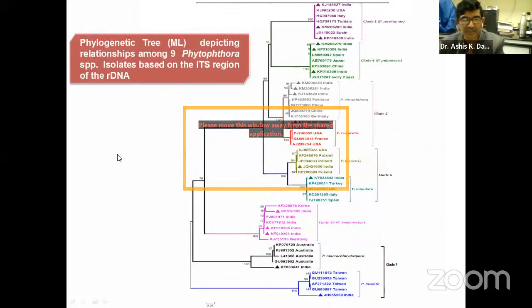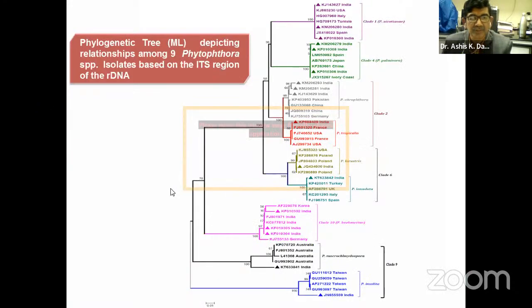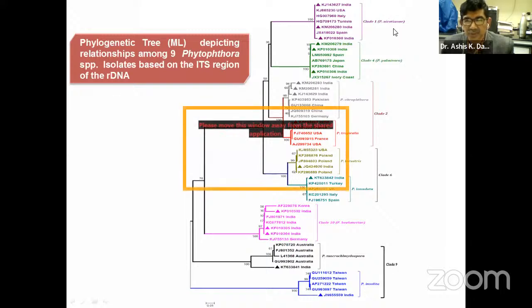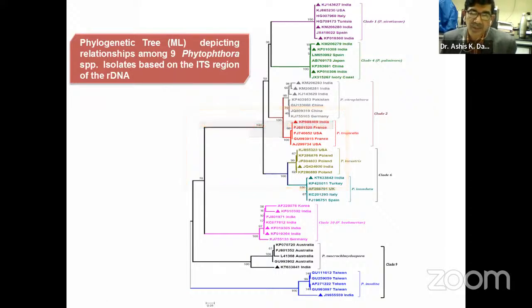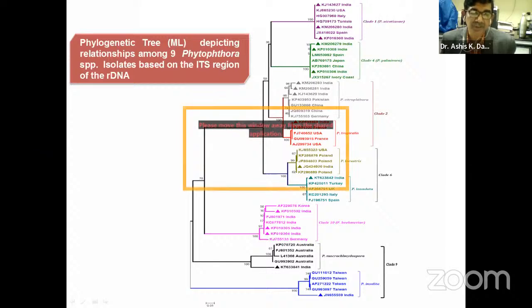We also constructed a phylogenetic tree depicting the relationship between different Phytophthora species. This ITS-based phylogenetic tree shows different clades — Phytophthora eicosiana belongs to clade 1, Phytophthora palmivora to clade 4, and P. citrophthora and P. tropicalis to clade 2. By doing maximum likelihood analysis we identify our species of interest. Using BLAST search you can assess sequence similarity, then carry out phylogenetic analysis using software like MEGA.